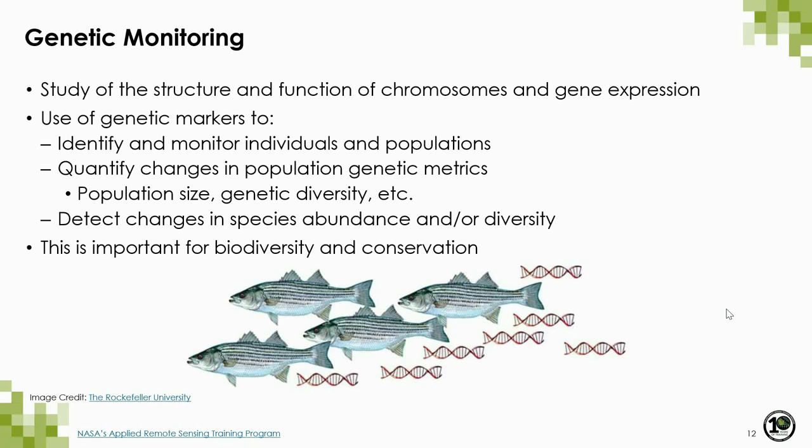The other piece of landscape genetics is genetic monitoring, which is the study of the structure and function of chromosomes and gene expression. These genetic markers can be used to identify individuals, species, or populations, and especially to quantify changes in population genetic metrics such as effective population size or genetic diversity. Genetic monitoring is thus useful for detecting changes in species abundance or diversity, and is a really important tool for conservation management, especially in highly controlled river systems where the health of certain fish species is managed.